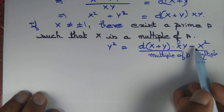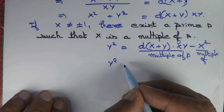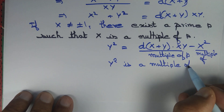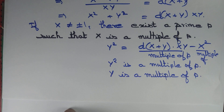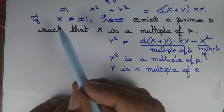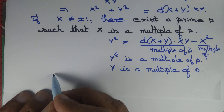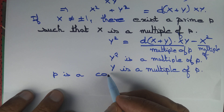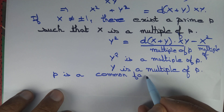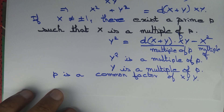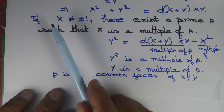The difference of two multiples of p has to again be a multiple of p. Therefore Y² is a multiple of p. Since Y is an integer, if Y² is a multiple of p then Y also has to be a multiple of p. So both X and Y are multiples of p — in other words, p is a common factor of X and Y. But by our choice of X and Y, they do not have any common factor — contradiction.